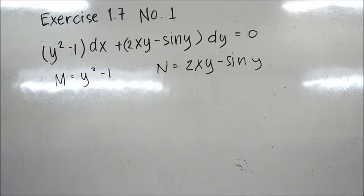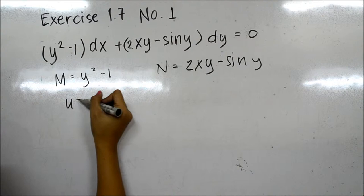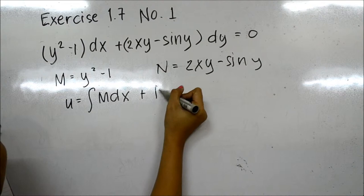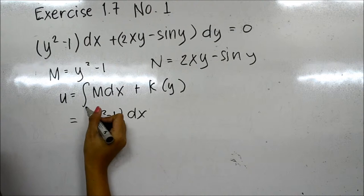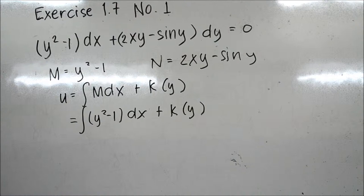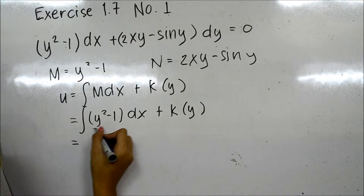The next step is to find the function u using the equation: integral of M dx plus k(y). Substituting, we have the integral of (y² - 1) dx, which gives us (y² - 1)x plus k(y).